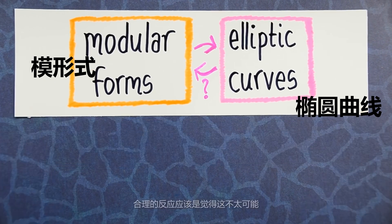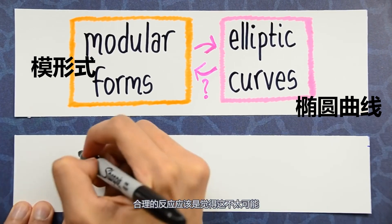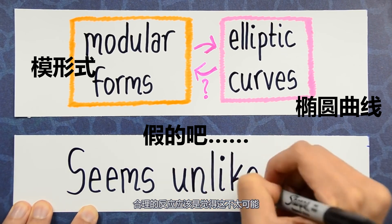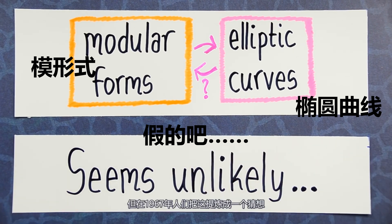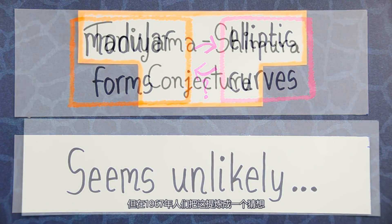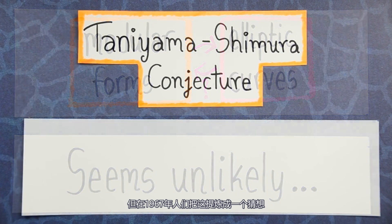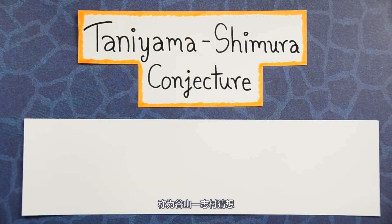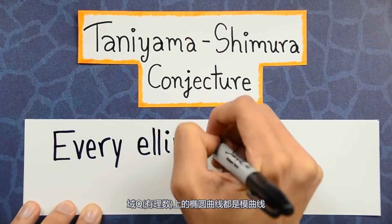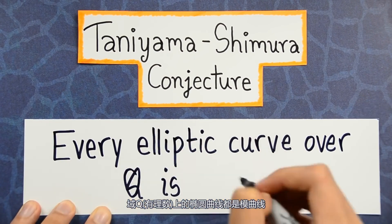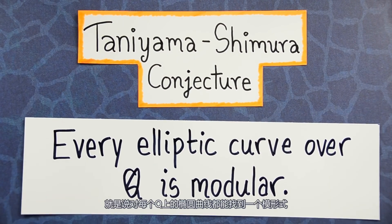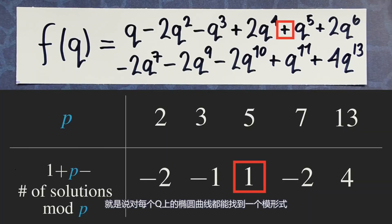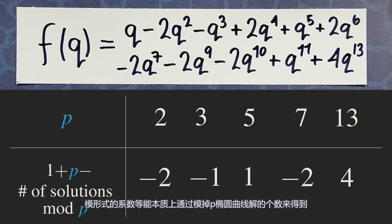When you first hear this, a reasonable reaction is that it seems very unlikely. But in 1967, this feeling was formalized into a conjecture that became known as the Taniyama-Shimura conjecture: every elliptic curve over Q is modular. That is, for every elliptic curve over Q, there is a modular form whose coefficients are essentially the number of solutions mod p to this elliptic curve.